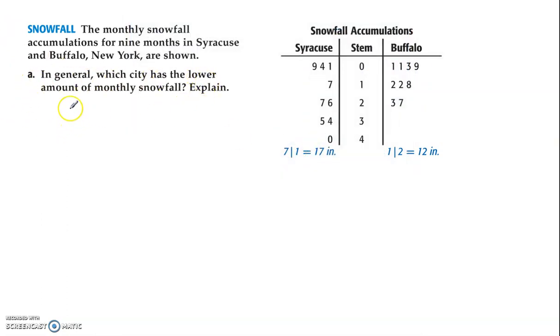In general, which city has the lower amount of monthly snowfall? Okay, so we had a look at this, and just visually we can already see. This right here is 0. According to this, that means 0, 1. That's 1 inch. Okay? So this is the smaller snowfall. Here is the highest snowfall at 40 inches. So overall, we can see Buffalo has the lower amount of snowfall because the scores are clustered together in the lower end.